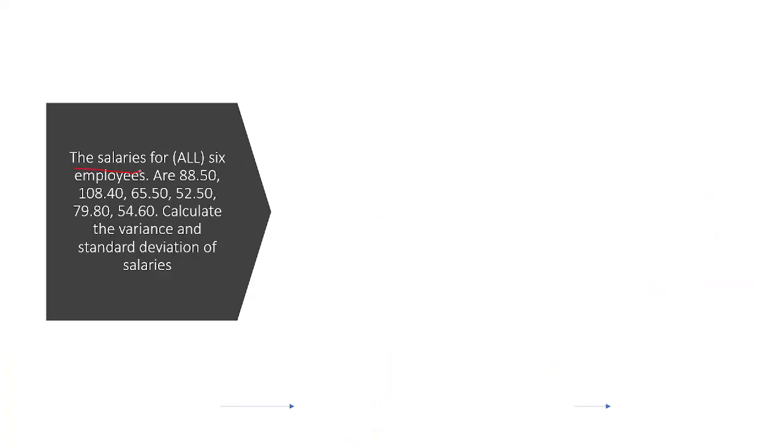Next one. The salaries for all... If you remember the past video, you know all means population. So we're going to use the population formula. The salaries for all six employees are 88, 108, 65, 52, 79, 54. Calculate the variance and the standard deviation for the salaries. Let's do that. So we're going to find the formula here. Just N. It's 6. N equals 6. Given in the question right here.